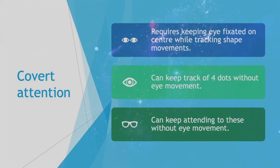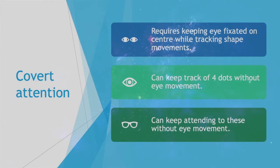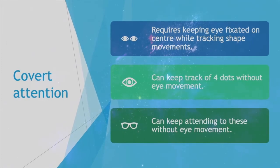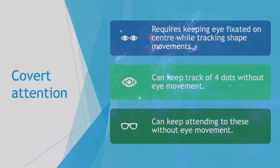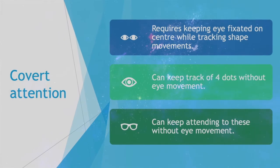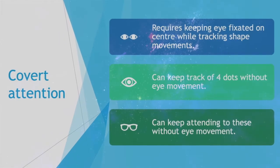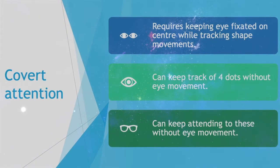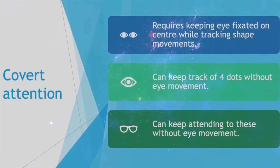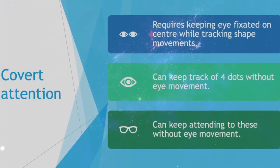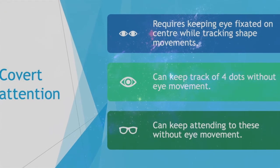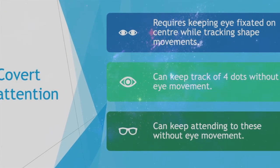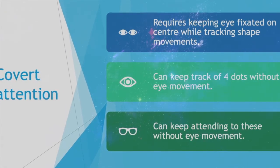Covert Attention requires keeping eyes fixated on the center while tracking shape movements. It was found that individuals can keep track of four dots or four shapes without eye movement, and that we can keep attending to those without eye movement, but it has to be within the limited four.